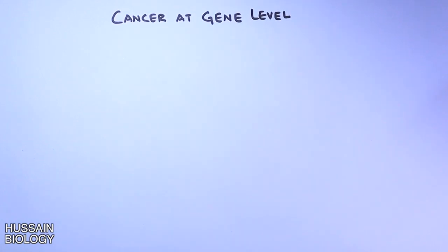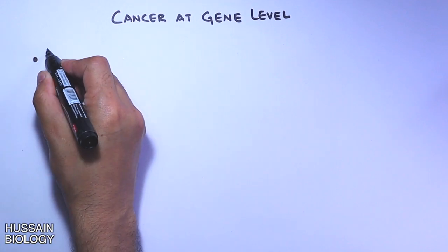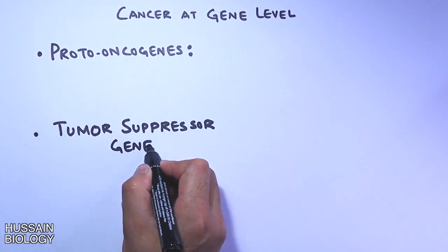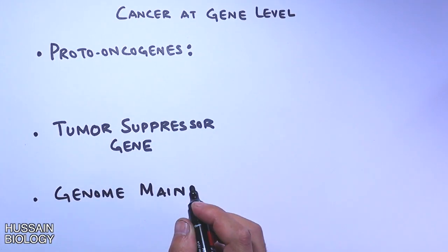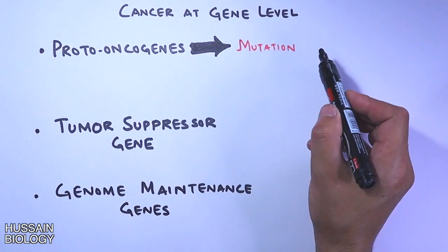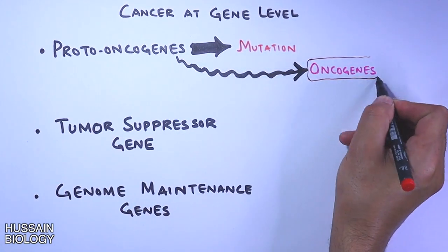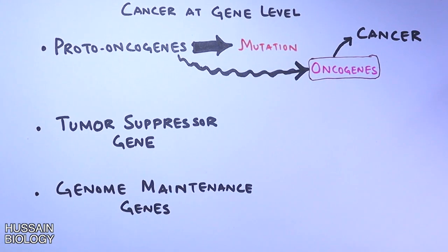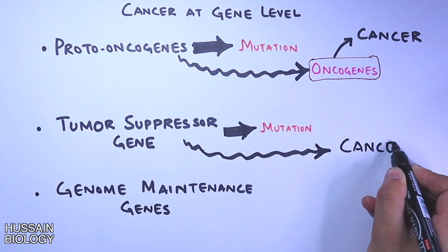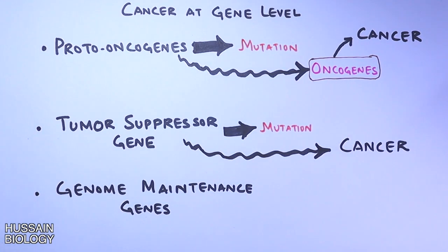At the gene level, there are three different kinds of genes able to promote cancer once mutated. The first is proto-oncogenes — a normal gene that once mutated becomes an oncogene promoting cancer. The second is tumor suppressor genes, which inhibit and check cell proliferation or tumor formation, but once mutated can also promote cancer.